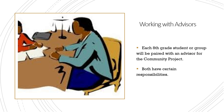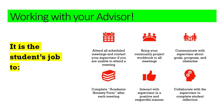Each 8th grade student or group will be paired with an advisor for the community project — a faculty member at East they'll have a lot of contact with. For students, their responsibilities include: attending all scheduled meetings and contacting the supervisor if unable to attend; bringing the community project workbook to all meetings; communicating with the supervisor about goals, progress, and obstacles; completing an academic honesty form after each meeting; and interacting with the supervisor in a positive and respectful manner and collaborating to complete the student reflection.